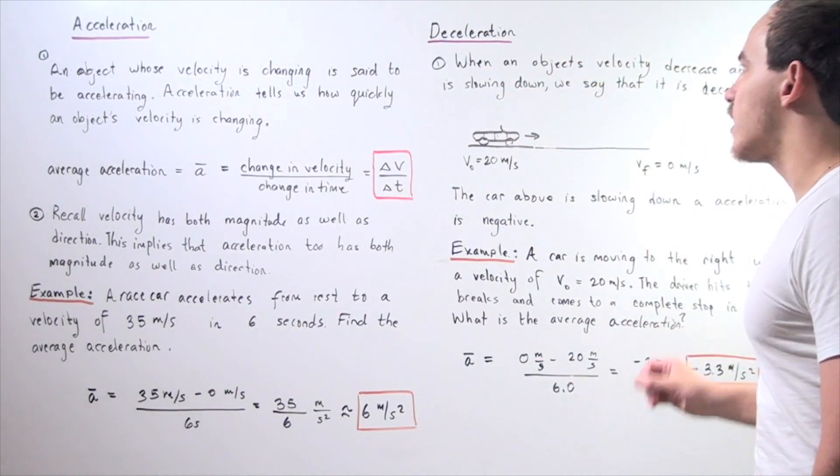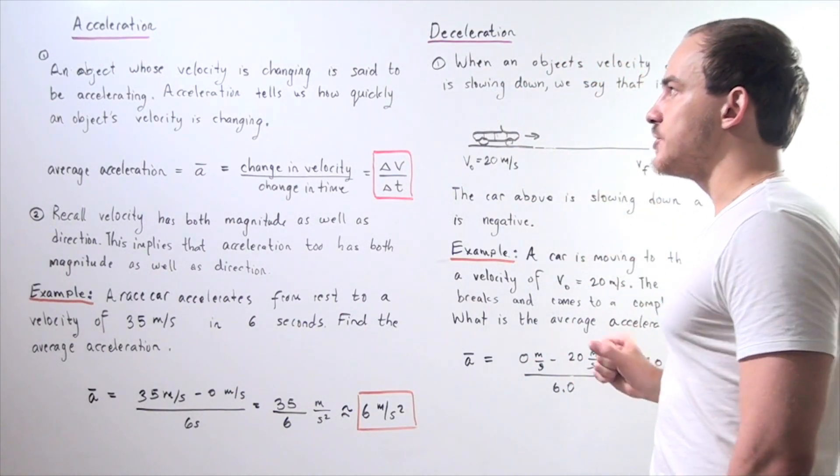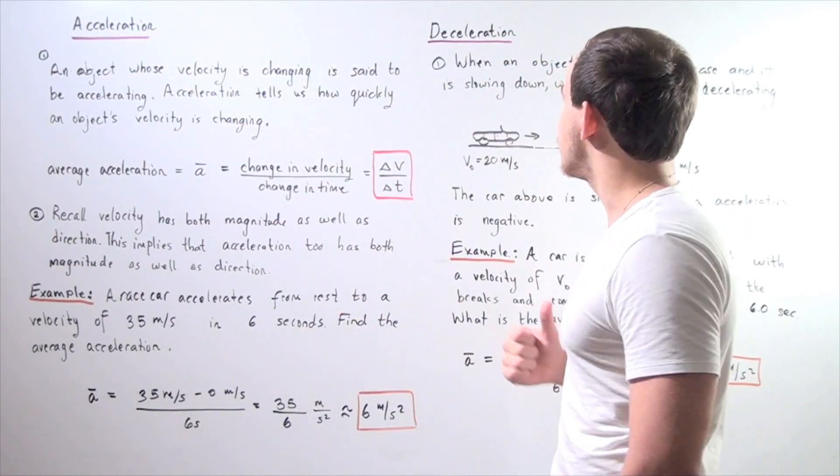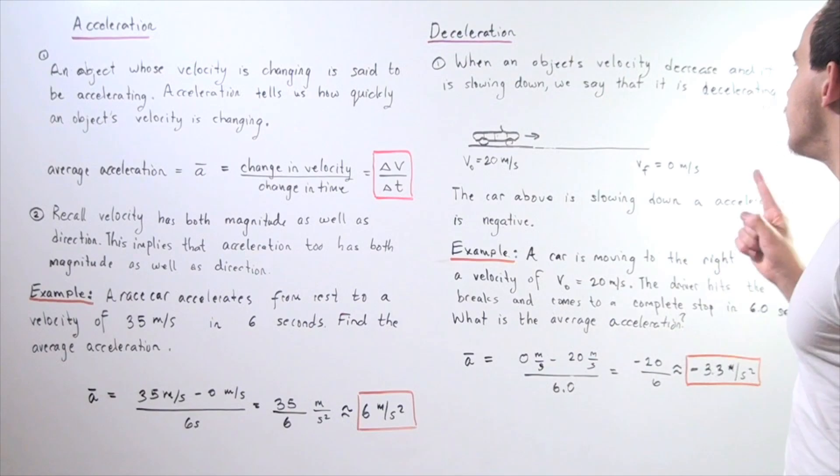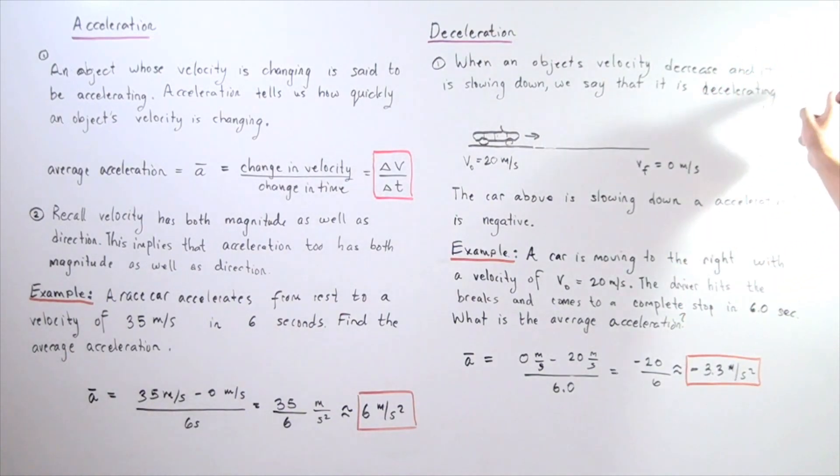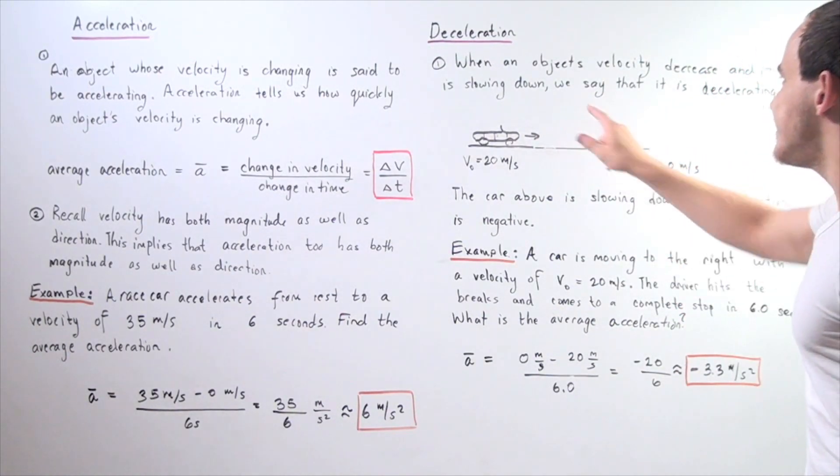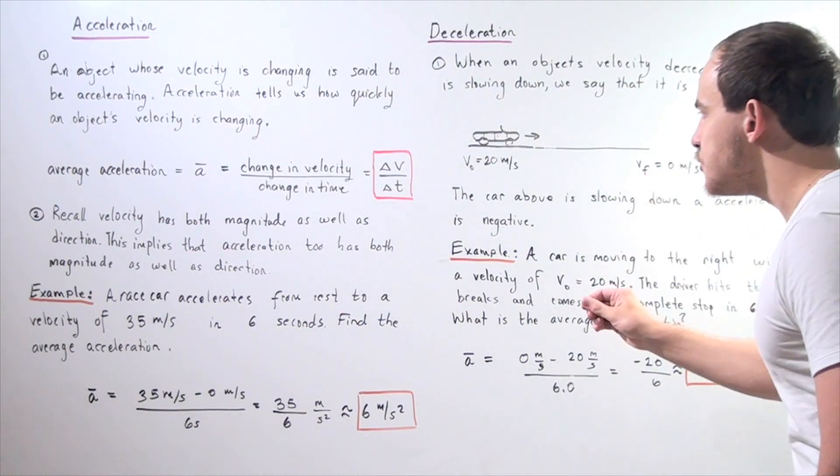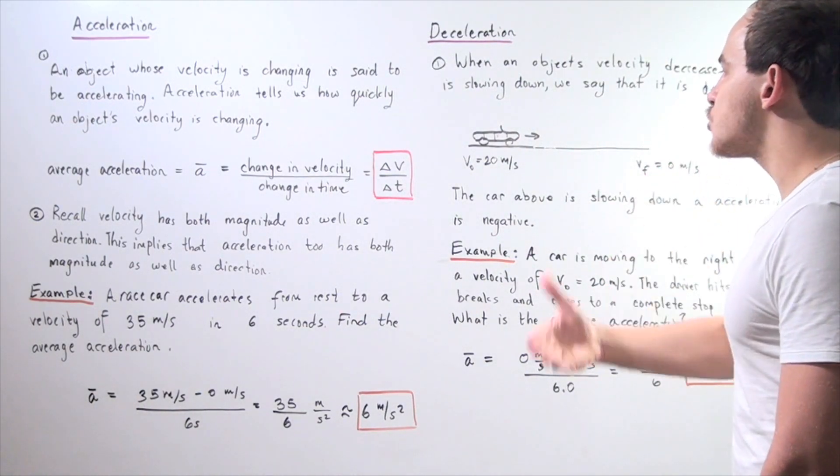Let's look at deceleration. Deceleration is actually acceleration in the opposite direction of our velocity. When an object's velocity decreases and it is slowing down, we say that it is decelerating. Deceleration is simply the car slowing down.